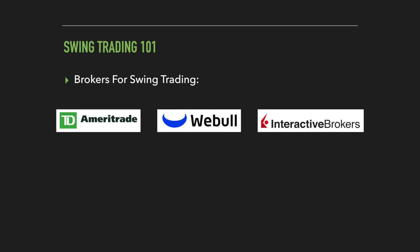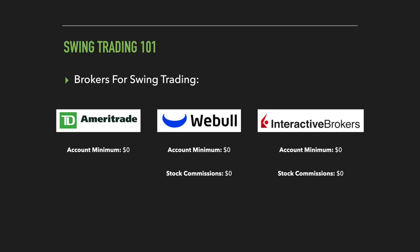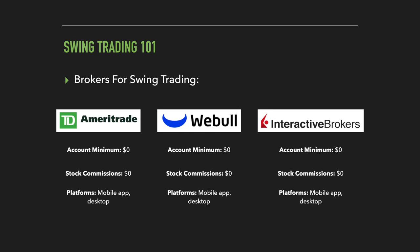When it comes to choosing a brokerage for swing trading, there are tons of options and most are very similar now that most brokers have become completely commission-free for US stock trades. A few I recommend are TD Ameritrade, Webull, and Interactive Brokers. All three have a minimum account balance of zero dollars, are completely commission-free for US stock trades, and offer both mobile app platforms and desktop platforms so you can trade on the go or use a more advanced trading interface.